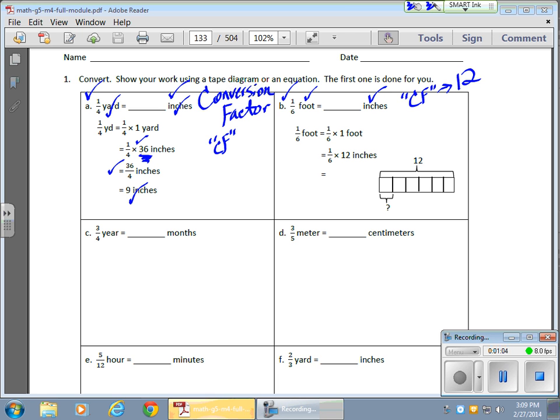And I need to take one-sixth of that foot. And they draw a nice little picture here, a nice little tape diagram. And they give you the total of 12. They split it into 1, 2, 3, 4, 5, 6 parts, which is good because I'm looking for one-sixth of that. So I need the value of this guy right here.